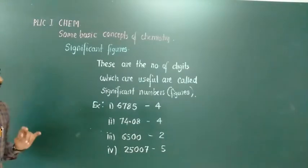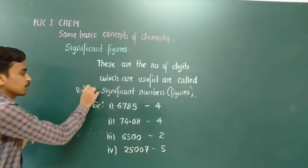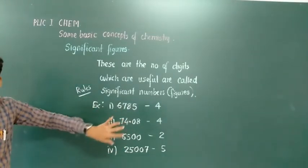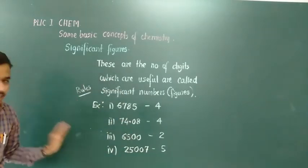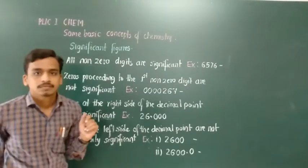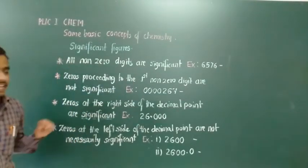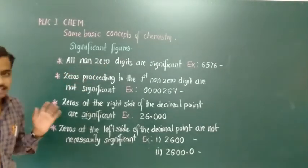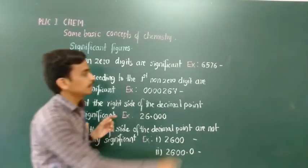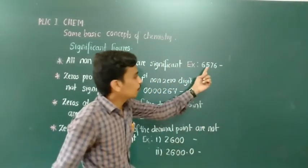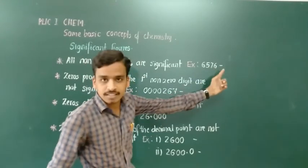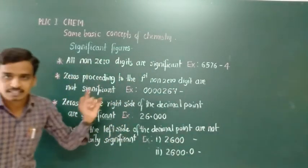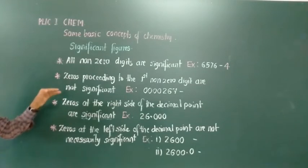There are some rules to identify the significant figures. Some rules you already know, and the remaining will be explained now. The first rule is: all non-zero digits are significant. So for a number like 6785, each digit is non-zero, and therefore the significant number is 4.